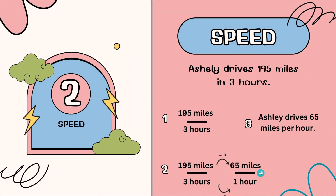Let's take a look at an example regarding speed. Ashley drives 195 miles in 3 hours. First I'm going to write my ratio: 195 over 3. Then I'm going to see what my factor of change is. I'll put the denominator as 1. How do I get from 3 to 1?